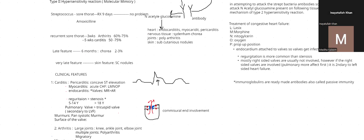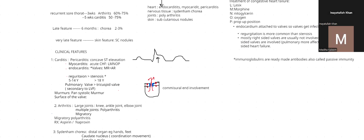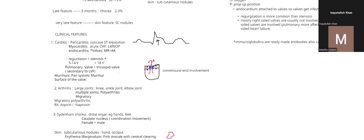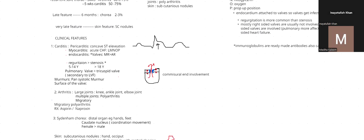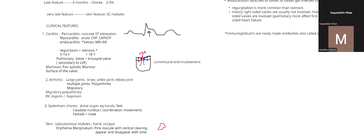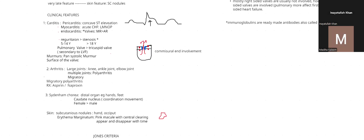If the bacterium involves the endocardium, the patient can develop endocarditis, and since the cardiac valves are attached to the endocardium, we can have mitral regurgitation and aortic regurgitation — mitral regurgitation being more common. Regurgitation is more common than stenosis and is more common in younger age groups (5–14 years), while stenosis is more likely in older patients over 18 years.